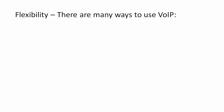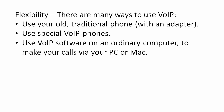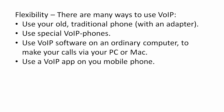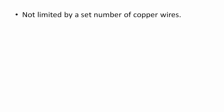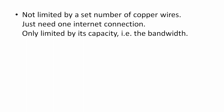VoIP calls can also be made in different ways, which makes it even more flexible. You can keep and use your old traditional phone together with adapters to hook into the internet and the VoIP system. Or you can use special VoIP phones made specifically for the VoIP system. You can use software on an ordinary computer to make your calls via your PC or Mac. You can even have a VoIP app on your mobile phone. You're not limited by the number of copper wires that run into your business office — you just need one internet connection, and you're only limited by its capacity, i.e. the bandwidth.